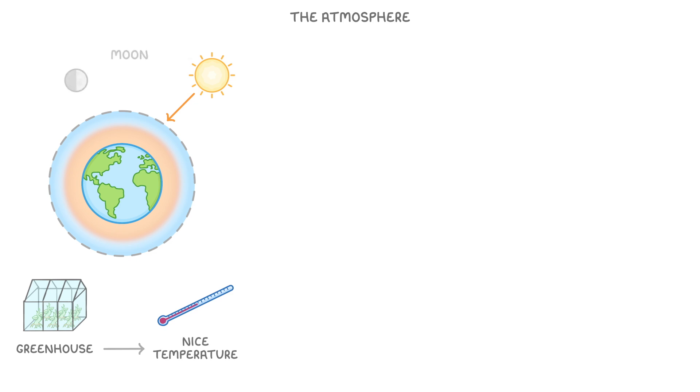For comparison, the moon, which is just as far away from the sun as we are, but has no atmosphere, varies between positive 100 degrees on the sunny side to minus 200 degrees on the dark side.